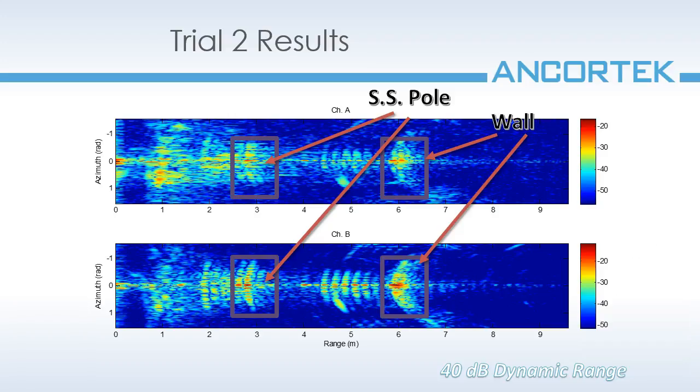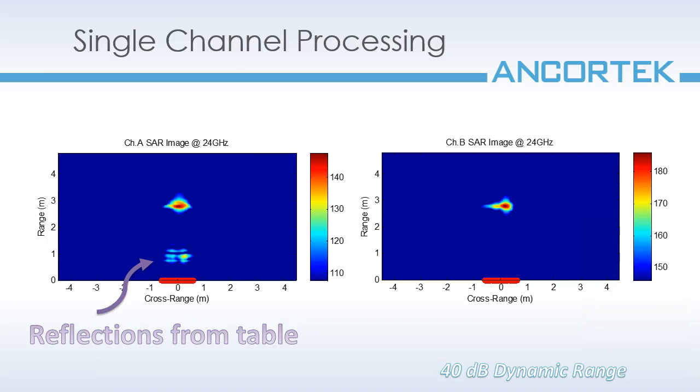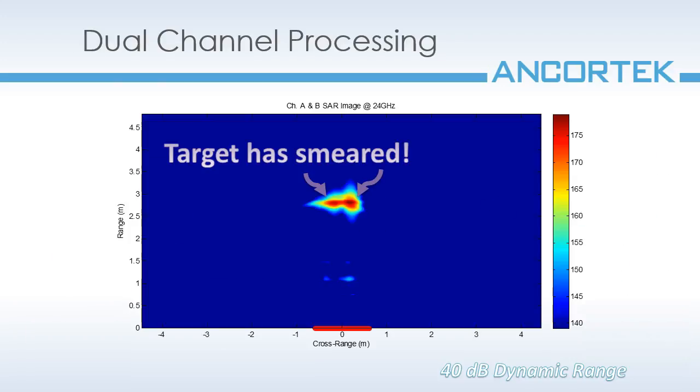Wow, so as expected, I don't get the strong return from the corner reflector, but I'm still able to make out the location of the pole in the scene. I perform the same stolt mapping with an extra gain stage to try and enhance the return from the pole. It shows up well in channel A, along with our table reflections once more, but channel B seems to have drifted. When I coherently integrate the two channels to process the image, this phase drift becomes clearly evident. In fact, it mistakenly shows two targets instead of one.